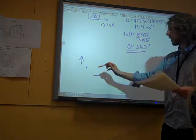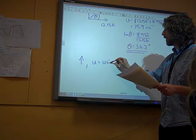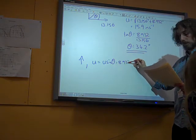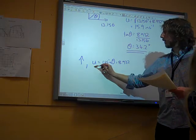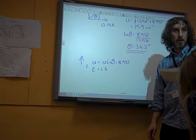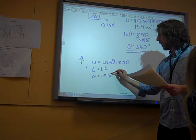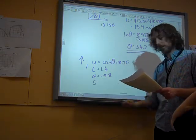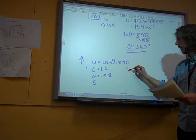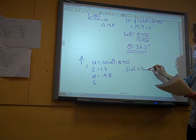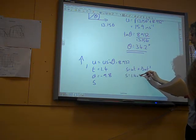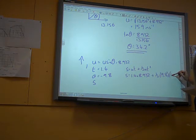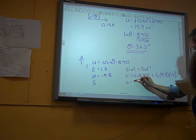If I'm thinking in the vertical direction I've got my initial speed is u sin theta which I now know is 8.932. I'm looking at what happens after 1.4 seconds. My acceleration is minus 9.8 and I want to find the vertical height, the displacement. So I'm using s equals ut plus half a t squared. S is 1.4 times 8.932 plus a half times minus 9.8 times 1.4 squared, and that gives me 2.9 meters.